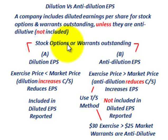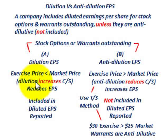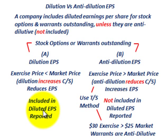With stock options and warrants outstanding, either they can have a dilutive effect on earnings per share or they can be anti-dilutive. With diluted earnings per share, by definition, this is where the exercise price is less than the market price. Going through the calculations, you are going to increase the number of shares of common stock, which reduces the earnings per share, and in that case we would include the diluted earnings per share as reported in our financial statements.